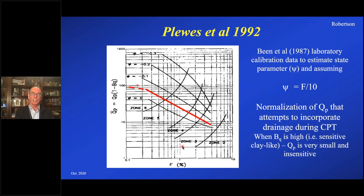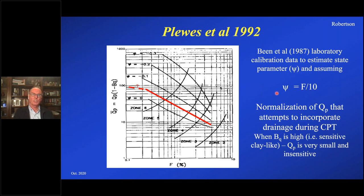Since there's a strong likelihood that Howard is in the audience, it's nice to reflect upon that first approach. Howard was really the first one to suggest that you could put contours of state parameter onto a soil behavior type chart — here it's normalized cone resistance against friction ratio, with a couple of contours drawn. The red line is sort of that boundary, which is roughly that minus 0.05 state parameter that Bean and Jefferies had suggested. So all values above that would be dilative and all values below it would be contractive.